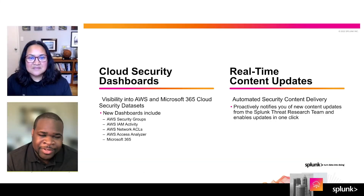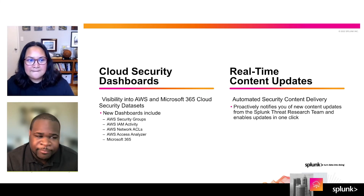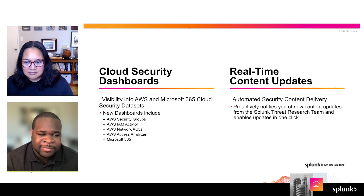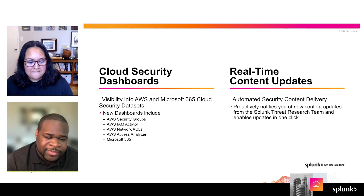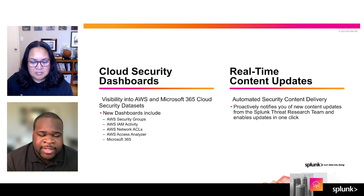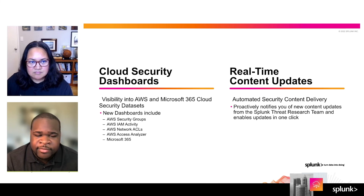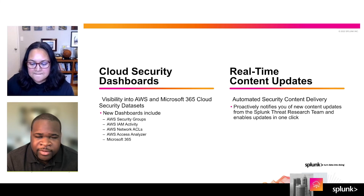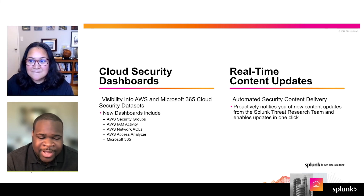I hope you're as excited about the new executive summary dashboard and the new security operations dashboard as I am. But that's not all. We have new cloud security dashboards that give you enhanced visibility into your AWS and Microsoft 365 cloud security data sets. This will provide you with enhanced visibility into things like security groups, network ACLs, and IAM activity. We also have some updates with real-time content updates in our Enterprise Security Content Updates app. Enterprise Security will now proactively notify you of new content updates from the Splunk Threat Research Team and enables you to get those updates in one click. This is going to dramatically simplify the route that new content comes from Splunk into your Enterprise Security environment.